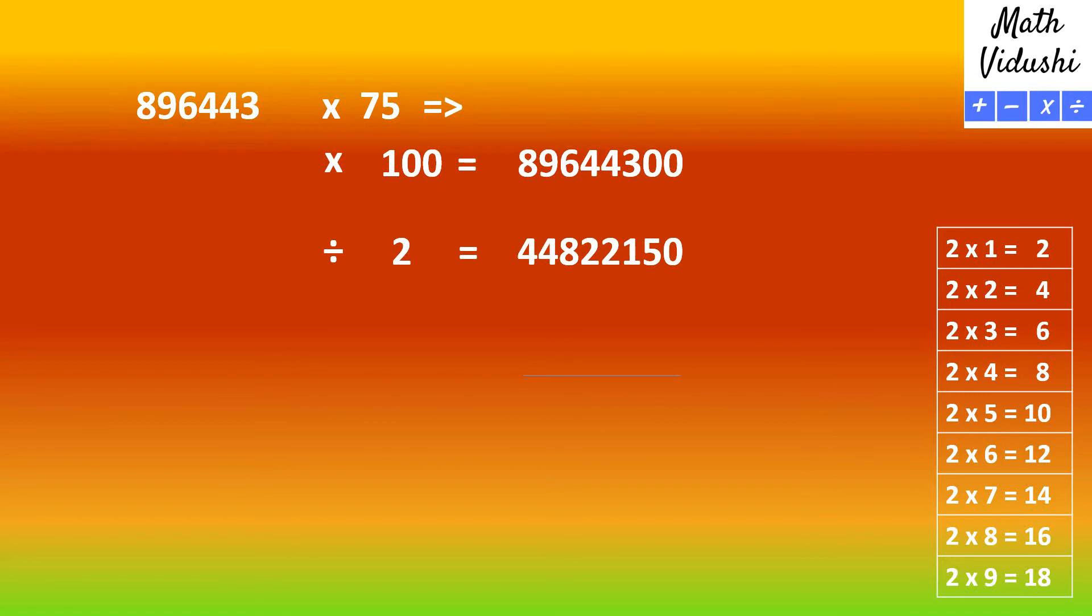Now you would further half this number and you get 22,411,075. And now you add the last two answers. So you would get 44,822,150 plus 22,411,075.